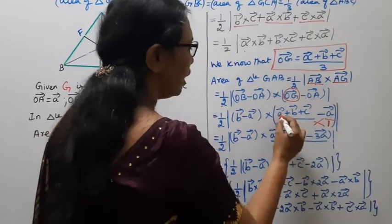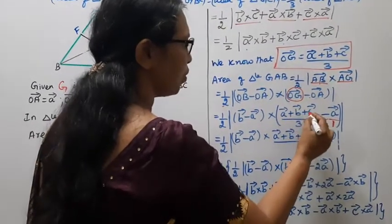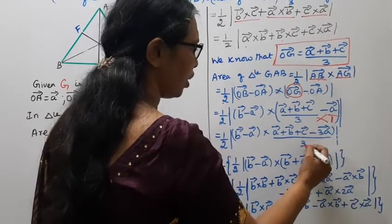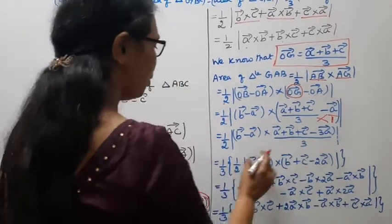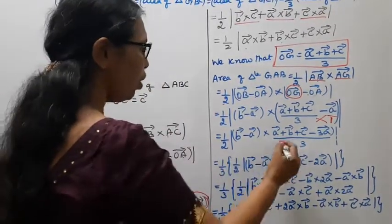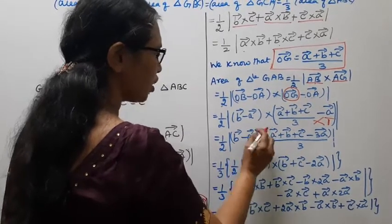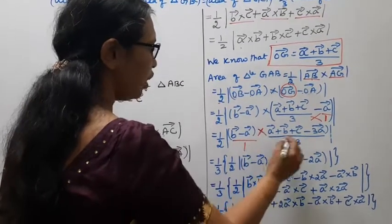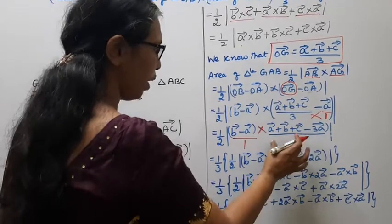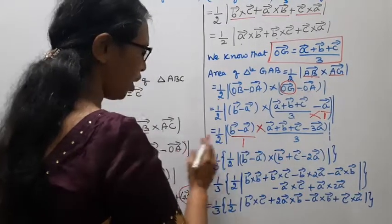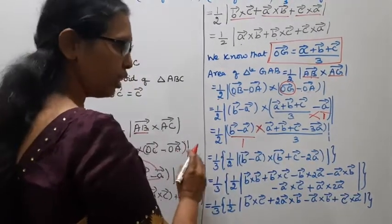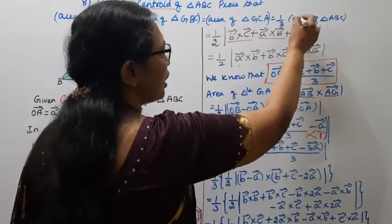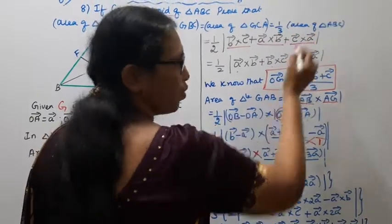So AG vector = OG vector minus OA vector = (A vector plus B vector plus C vector minus 3A vector) divided by 3, which equals one-third of area of triangle ABC.